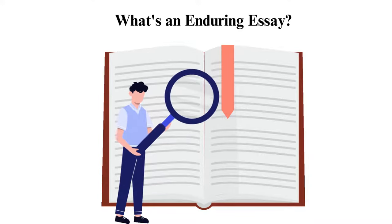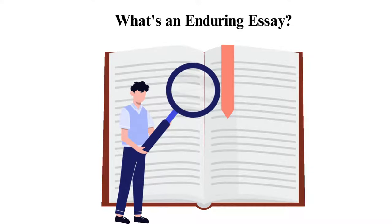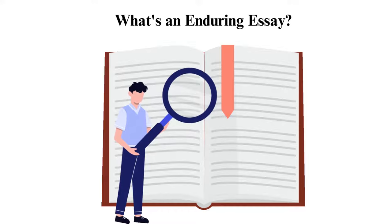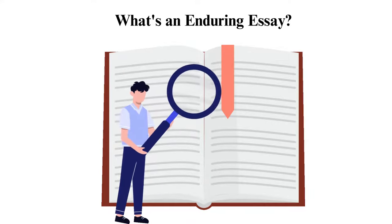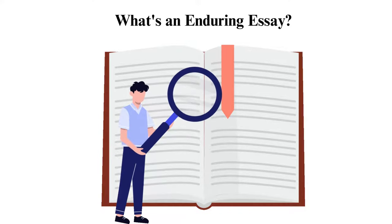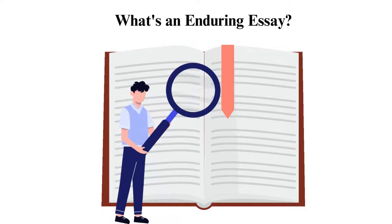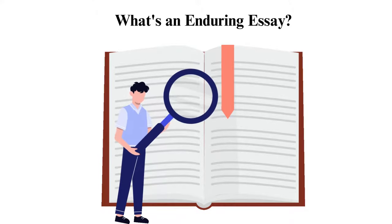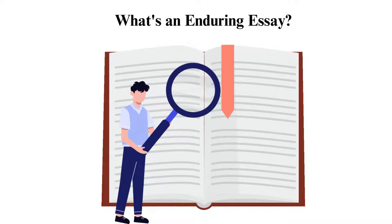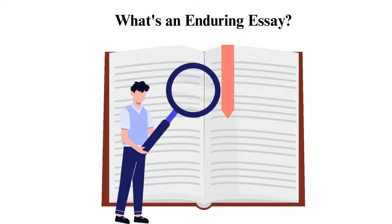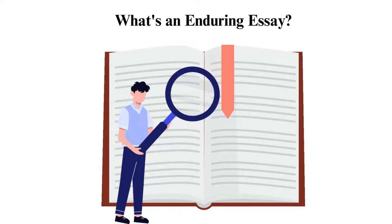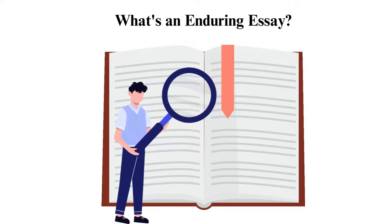From these examples, you can create different categories to discuss. For instance, you can write about hunger, floods, gender inequality, the strain on economic resources, etc. Then decide on the stand to take in the essay — either positive, neutral, or negative. As a learning example, let's choose Climate Change as our Enduring Issue.